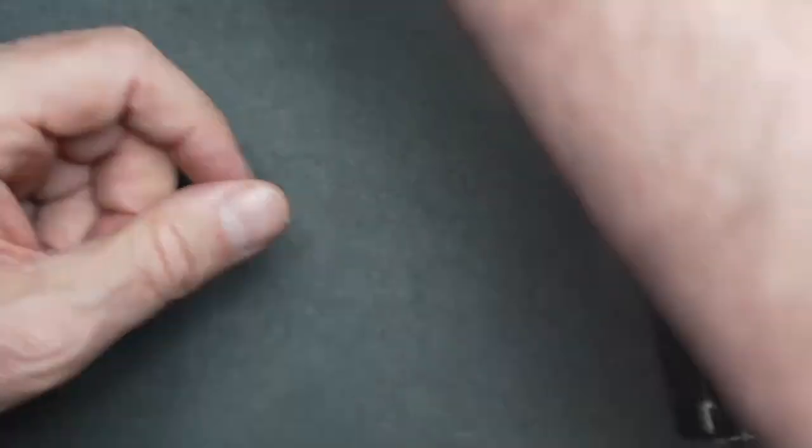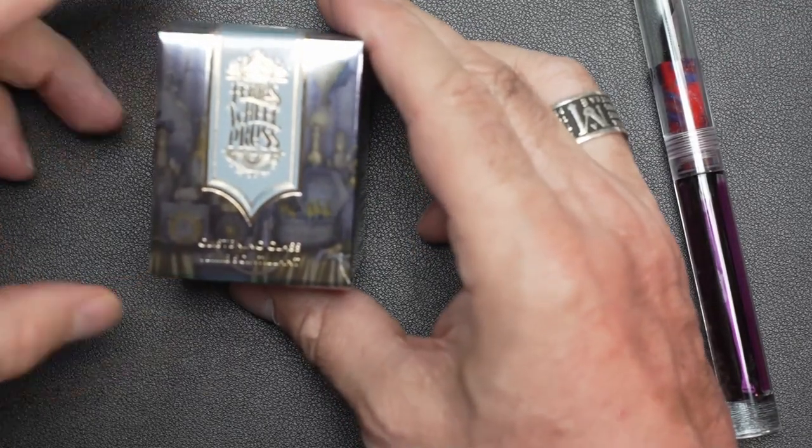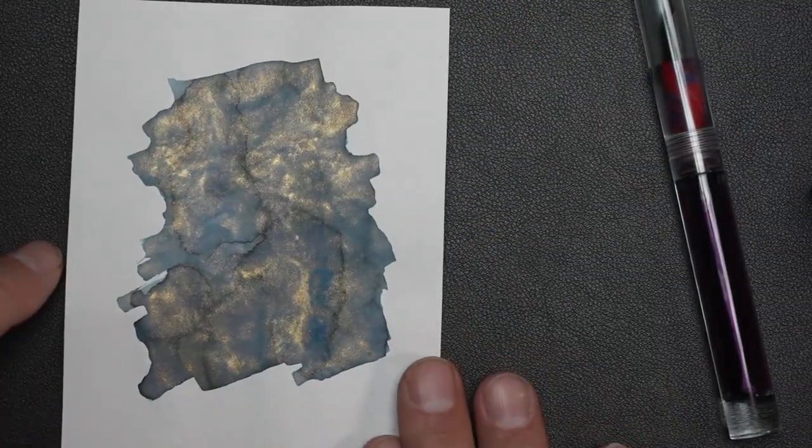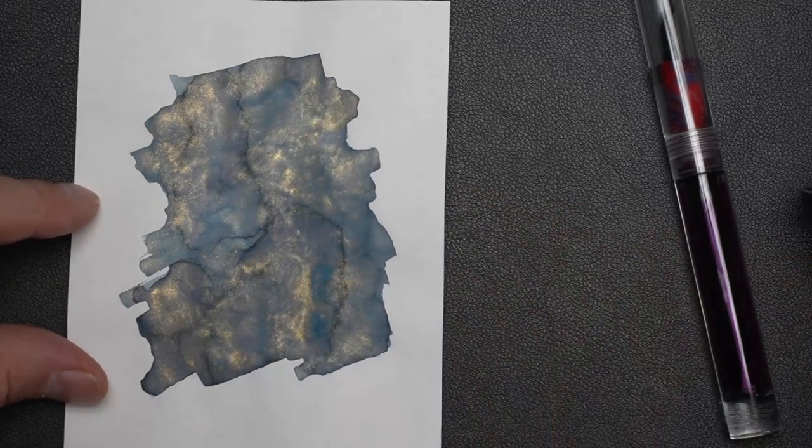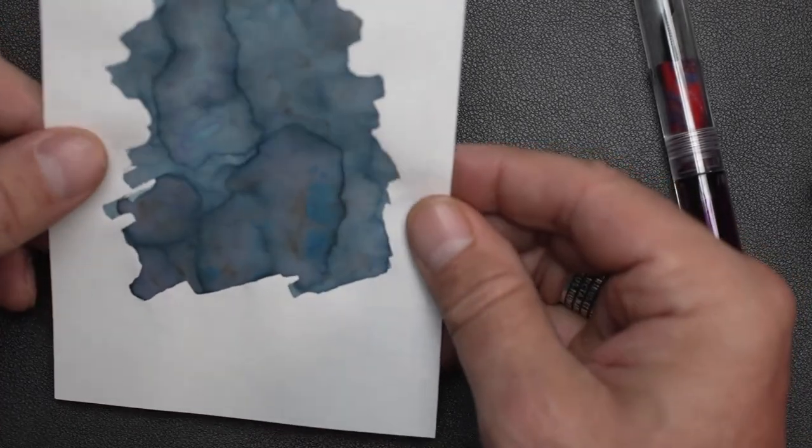In terms of the packaging, let's take a look at this first one. This one is by the name of Glistening Glass. And here's the swatch that I've done for you. So it's a gold shimmer.